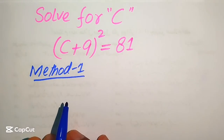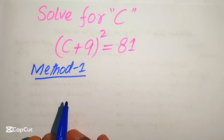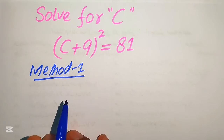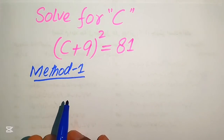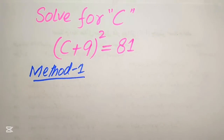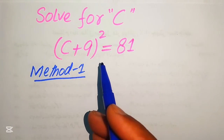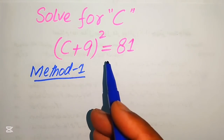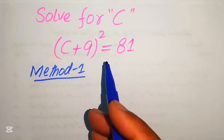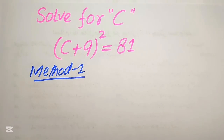Hello everyone, welcome to solve this nice math Olympiad algebra problem. Here we have (c + 9)² equals 81 and we will solve this problem for the values of c.